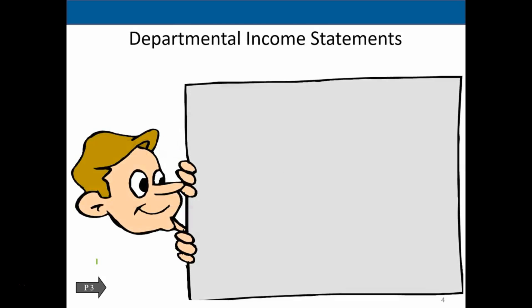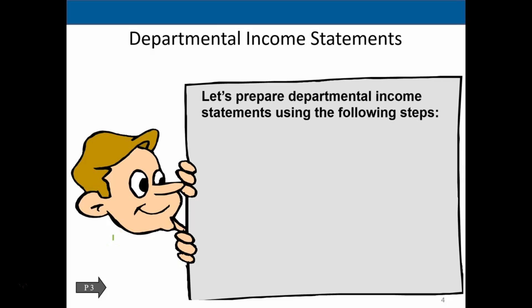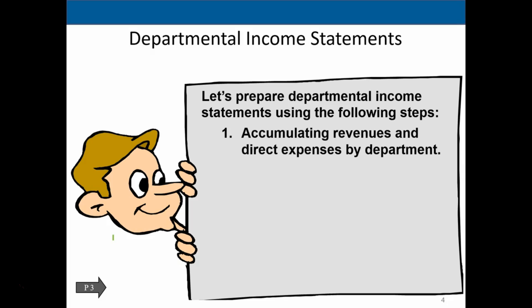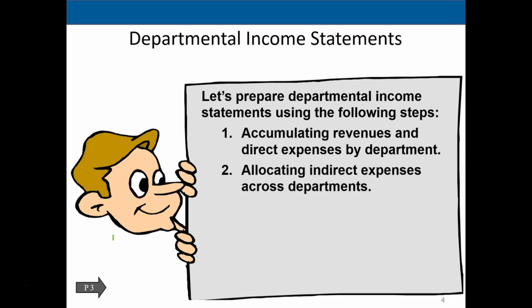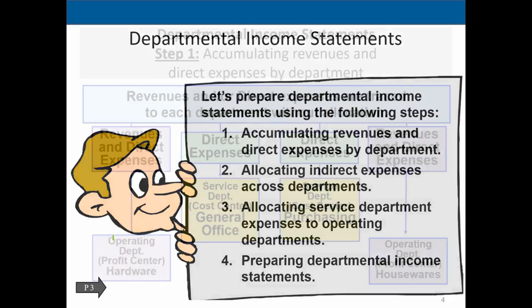Now we'll prepare the departmental income statement using the following steps. Step one: accumulate revenues and direct expenses by department. Step two: allocate indirect expenses across departments. Step three: allocate service department expenses to operating departments, since service departments support the operating departments and must be allocated out. Step four: prepare the departmental income statement.